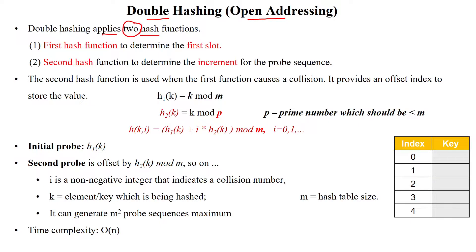Double hashing applies two hash functions — that's why it is called double hashing. Two hash functions will be applied to find out the empty slots. First, it will apply the first hash function to determine the first slot. If the first slot is not free, then we will use the second hash function to determine the increment for the probe sequence, that is the i value.